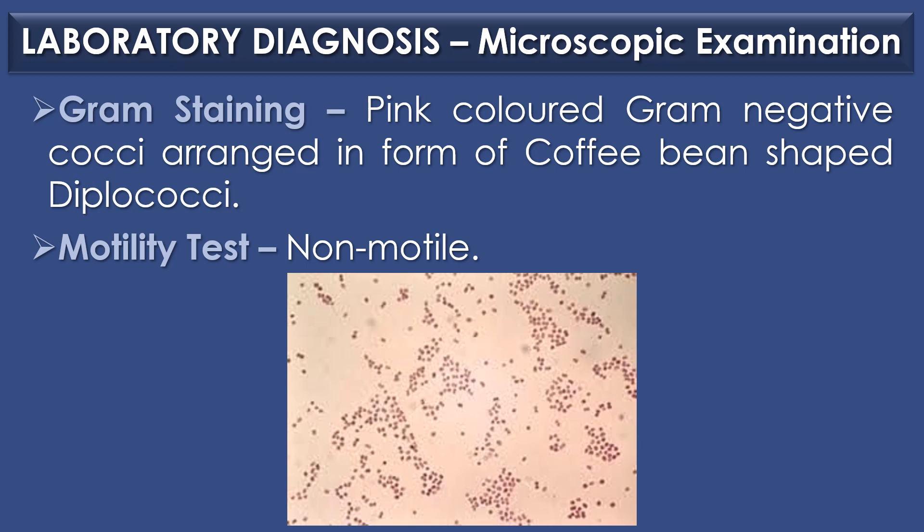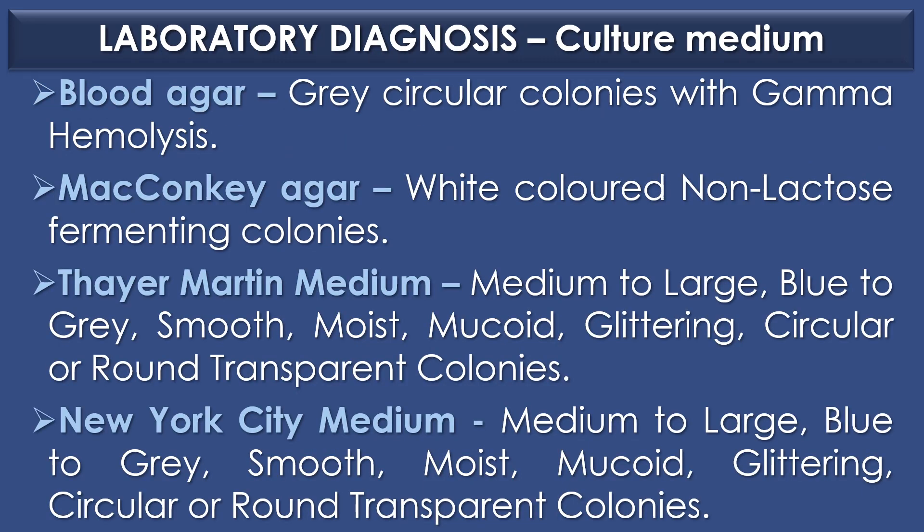Laboratory diagnosis of Neisseria meningitidis: The first diagnostic method is microscopic examination. Under gram staining, Neisseria meningitidis is observed as pink-colored gram-negative cocci arranged in the form of coffee bean-shaped diplococci. It is non-motile in nature. In blood agar, Neisseria meningitidis shows gray circular colonies with gamma hemolysis. In MacConkey agar, white-colored non-lactose fermenting colonies are observed.